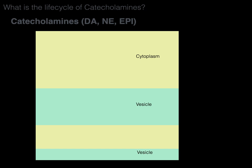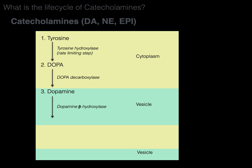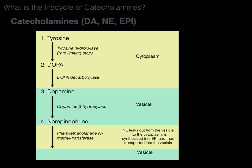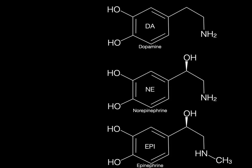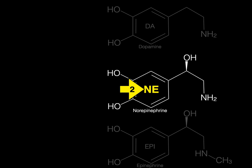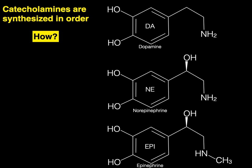Tyrosine is where we start. Tyrosine is converted by tyrosine hydroxylase into DOPA — dihydroxyphenylalanine. Then DOPA is converted by DOPA decarboxylase into dopamine, and through VMAT transported into the vesicle. Dopamine can then be converted by dopamine beta-hydroxylase, if present, into norepinephrine. Norepinephrine can leak out from the vesicle into the cytoplasm and be synthesized into epinephrine by phenylethanolamine N-methyltransferase, then transported back into the vesicle. So dopamine is synthesized first, then norepinephrine, then epinephrine — in order, driven by those specific enzymes.